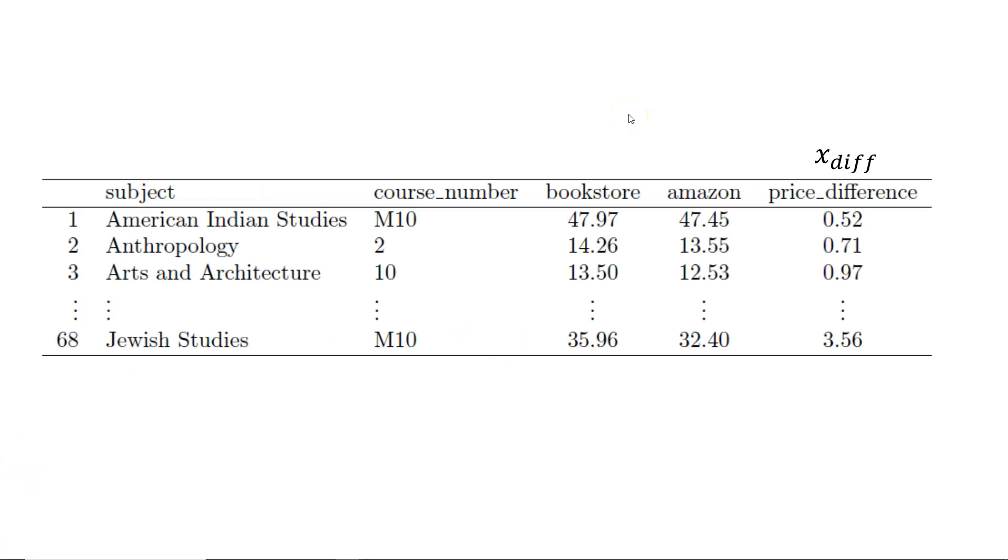So on this first slide, I've reproduced the data that was provided in the textbook for the example from Section 7.2. What I want to highlight is if you look at the far right, I've labeled the column that is titled Price Difference with the notation x subscript difference, which represents all these price differences for the various books.